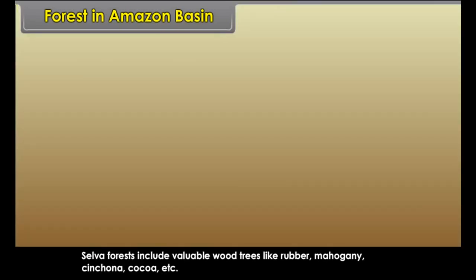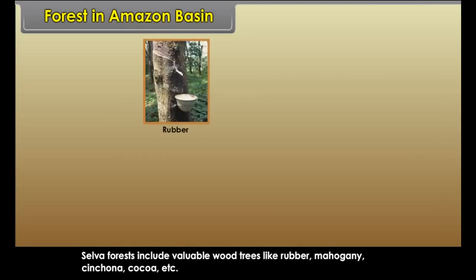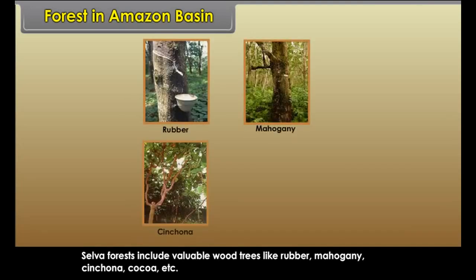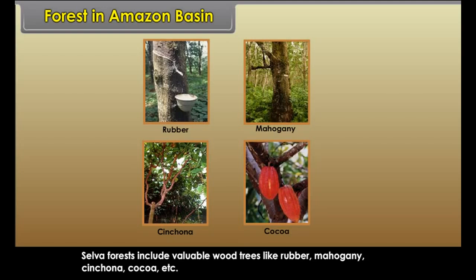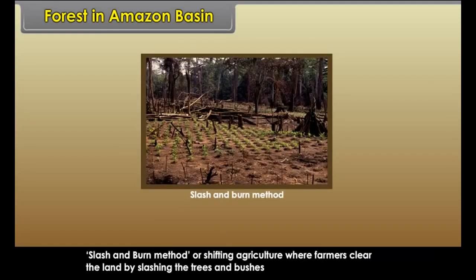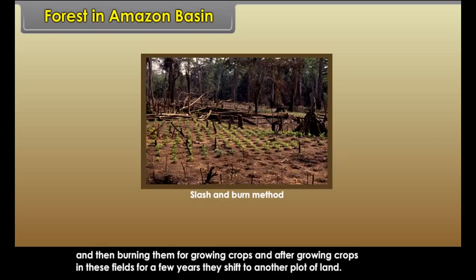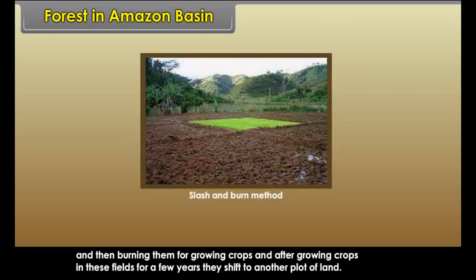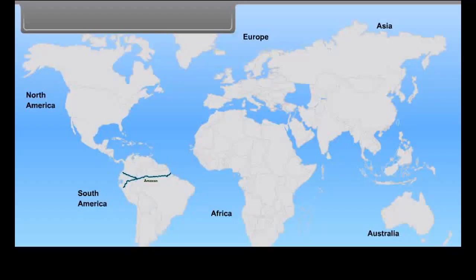Selva forests include valuable wood trees like rubber, mahogany, cinchona, cocoa, etc. The slash and burn method, or shifting agriculture, is where farmers clear the land by slashing the trees and bushes and then burning them for growing crops. After growing crops in these fields for a few years, they shift to another plot of land. This method is causing much harm to these forests.